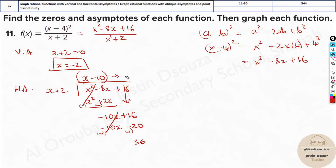The quotient from the long division gives us the oblique asymptote equation. So we now have both the vertical asymptote and the oblique asymptote. Now we just need to make a table of values and graph the function.